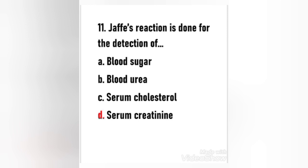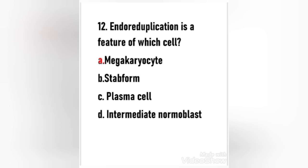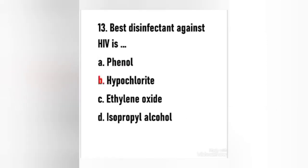Next question: Jaffe reaction is done for the detection of — (a) blood sugar, (b) blood urea, (c) serum cholesterol, (d) serum creatinine. The right answer is option D — Jaffe reaction is done for the detection of serum creatinine. Next question: Endo reduplication is a feature of which cell — (a) megakaryocyte, (b) stab cell, (c) plasma cell, (d) intermediate normoblast. The right answer is option A. Endo reduplication is a feature of megakaryocyte. It is a replication of the nuclear genome in the absence of mitosis, which leads to elevated nuclear gene content and polyploidy.